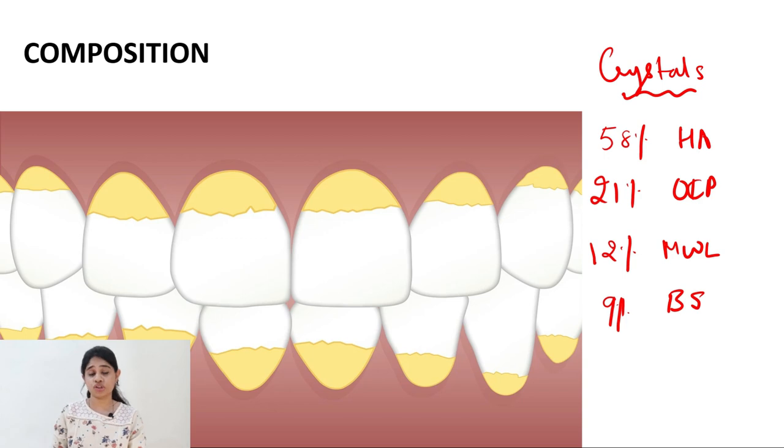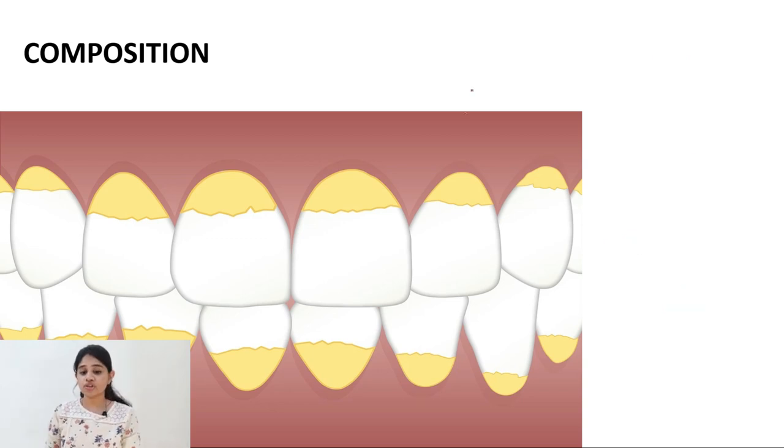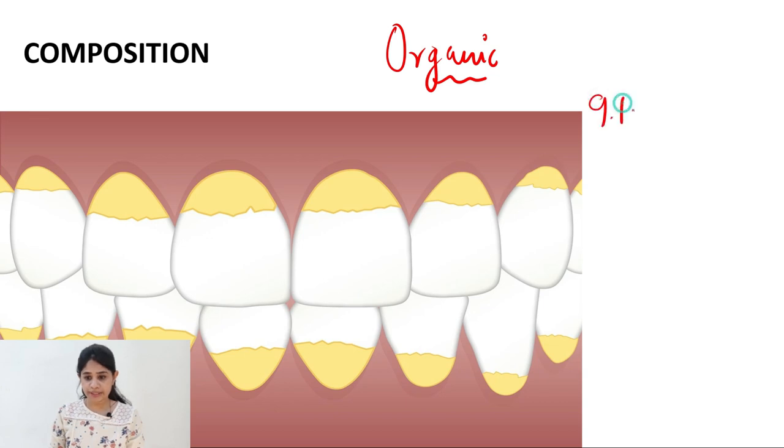Now coming on to the organic contents so it's mainly formed by a complex of proteins and polysaccharides so here we see approximately 9.1% of carbohydrates so glucose, galactose, mannose, fructose so these are the carbohydrates that can be seen 8.2% are formed by amino acids and minority that is traces 0.2% of lipids can be seen.